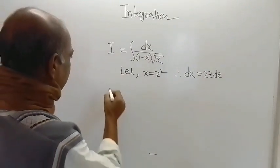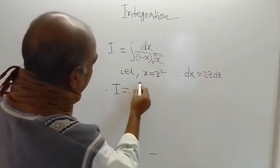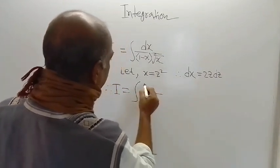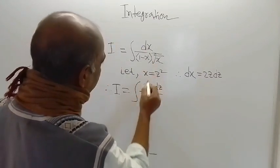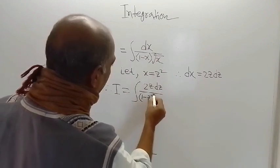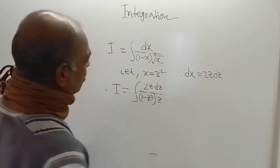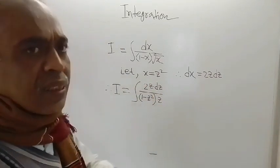So what is I in terms of z? That is equal to dx. This will be replaced by this 2z dz. And here 1 minus x is there, so 1 minus z square will be there. And root of x, that is equal to z. So this z in the numerator and this z in the denominator, they are cancelled.